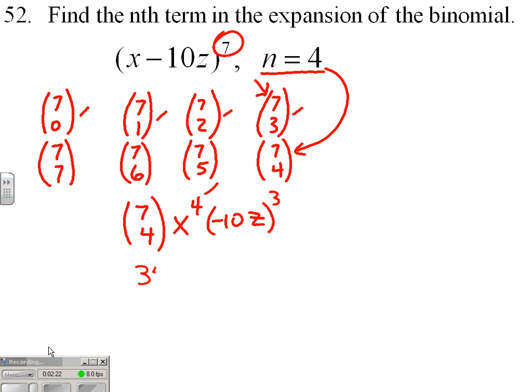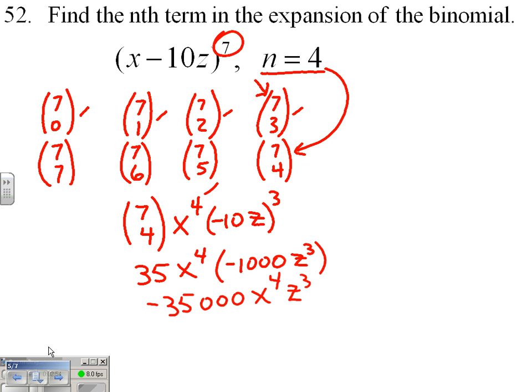And this is 35. I've got x to the fourth, I've got negative to the third—negative survives to the third—10 to the third is 1000, z to the third. So we end up with negative 35,000 x^4 z^3.